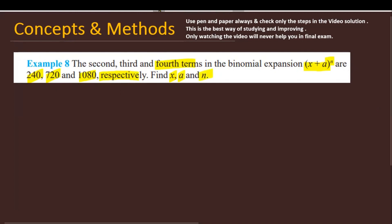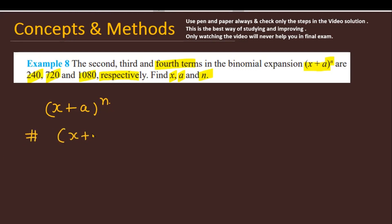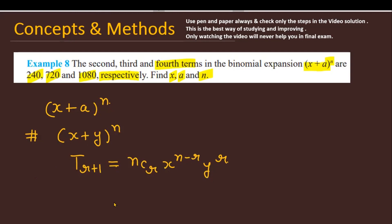Let's see how we are going to solve this problem. We start with the binomial expansion (x + a)^n. The key concept here is that if you have a binomial expression (x + y)^n, then the general term is given by the formula nCr * x^(n-r) * y^r.